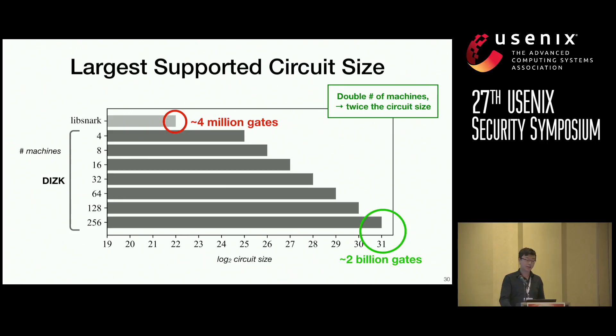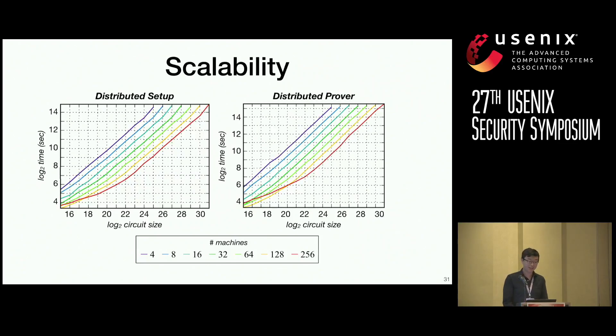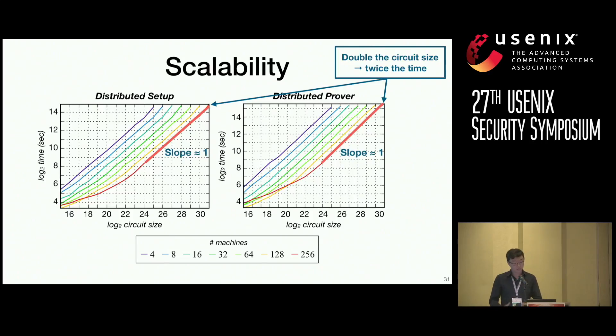This then led us to ask, could we compute up to these large circuit sizes in a time-efficient manner? And so, we have here two graphs that demonstrate scalability. On the left graph, we have the distributed setup. And on the right graph, we have the distributed prover. Note that this is a log-log graph. And if we follow the line for 256 machines, we see that the slope is actually approximately 1. And so, the pattern that we see is that as we double the circuit size, we're able to generate our proof and run our setup at approximately twice the time. This is a good demonstration that our system here is indeed scalable.